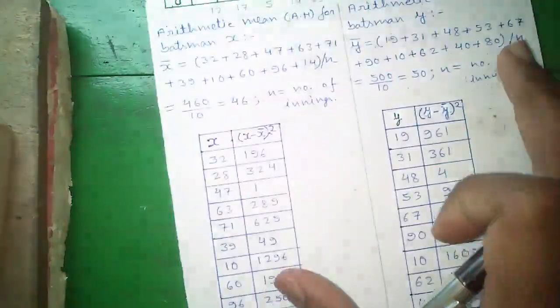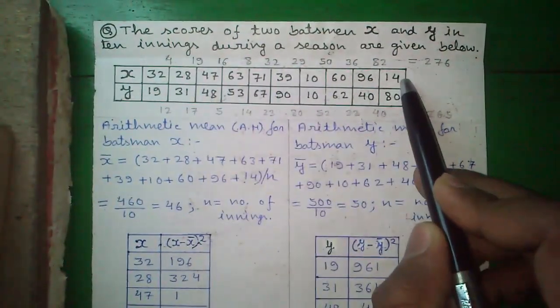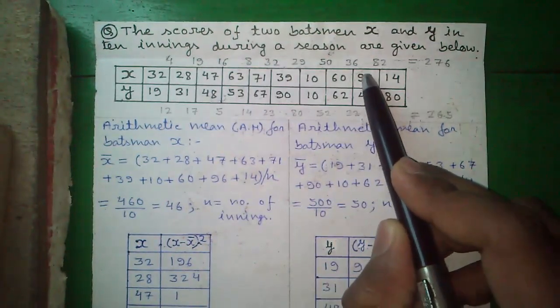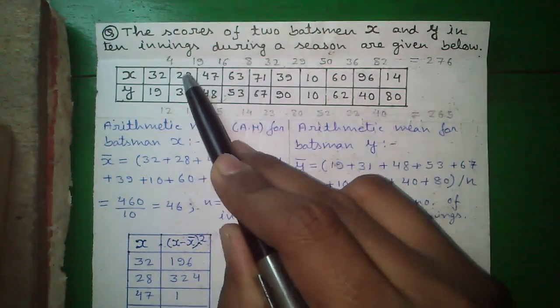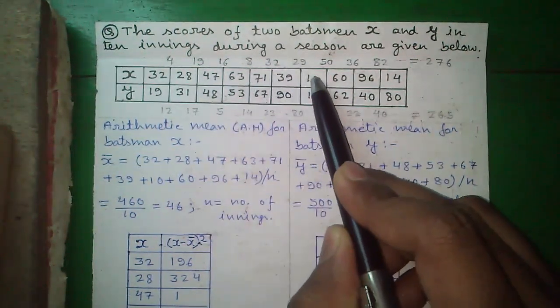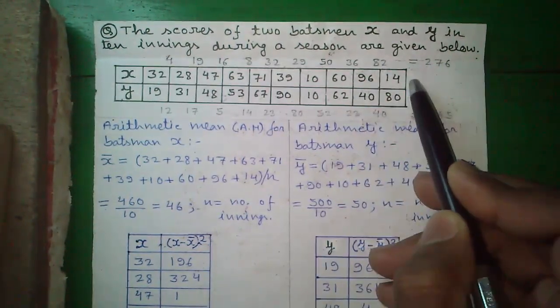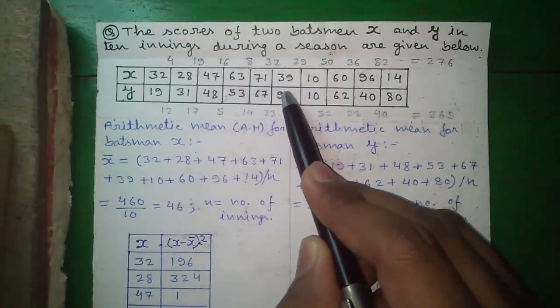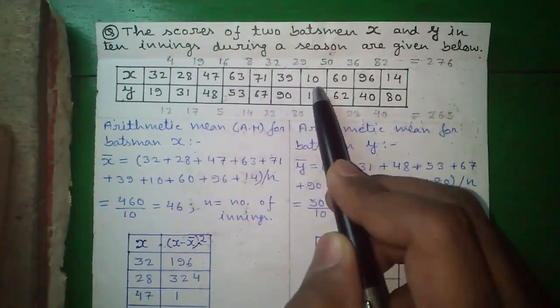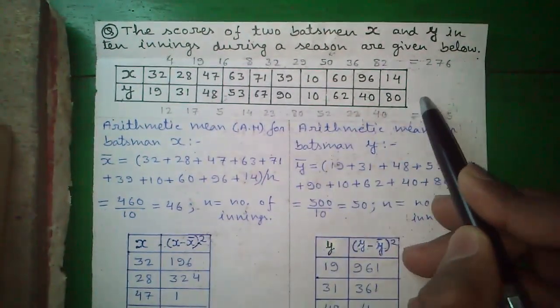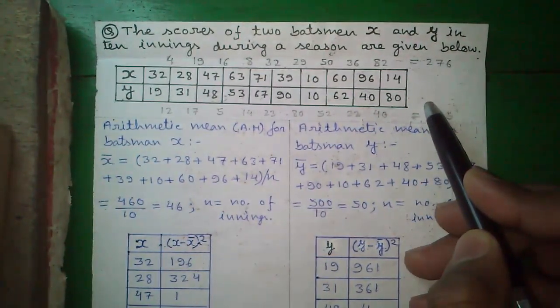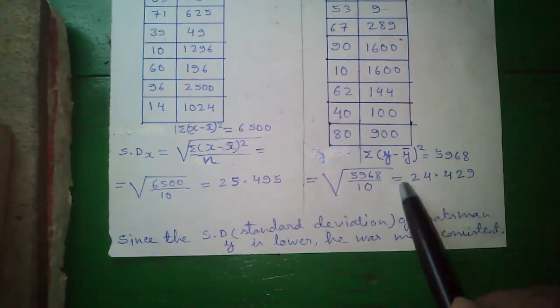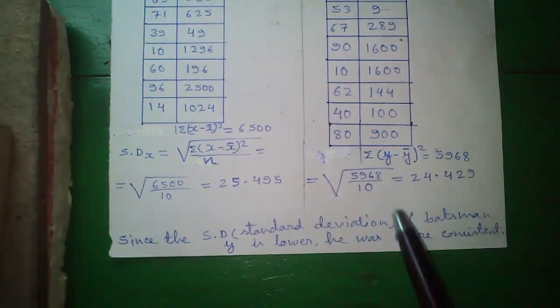Next, our shortcut method. For that, in X values, find out the largest number which is 96. Next, find out smallest number which is 10 and subtract smallest from the largest which is 86. For X and for Y, largest number is 90 and smallest number is 10. So, the difference is 80. Since the difference is less for Y, we can say standard deviation for Y will also be lower. As we derived by the process.